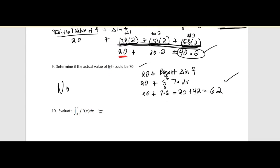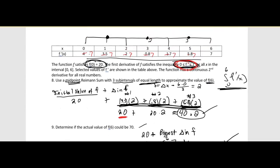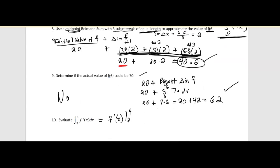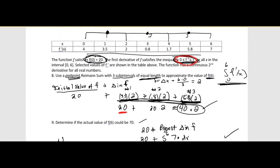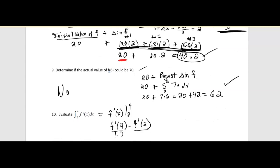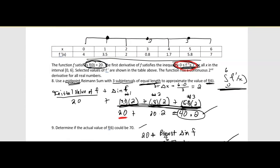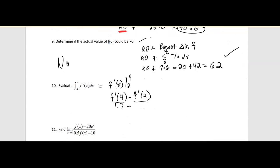Number 10: if we integrate f″ from 2 to 4, the antiderivative of f″ is f′, so we evaluate f′(4) minus f′(2). From the table, f′(4)=1.7 and f′(2)=2, giving 1.7 − 2 = negative 0.3.